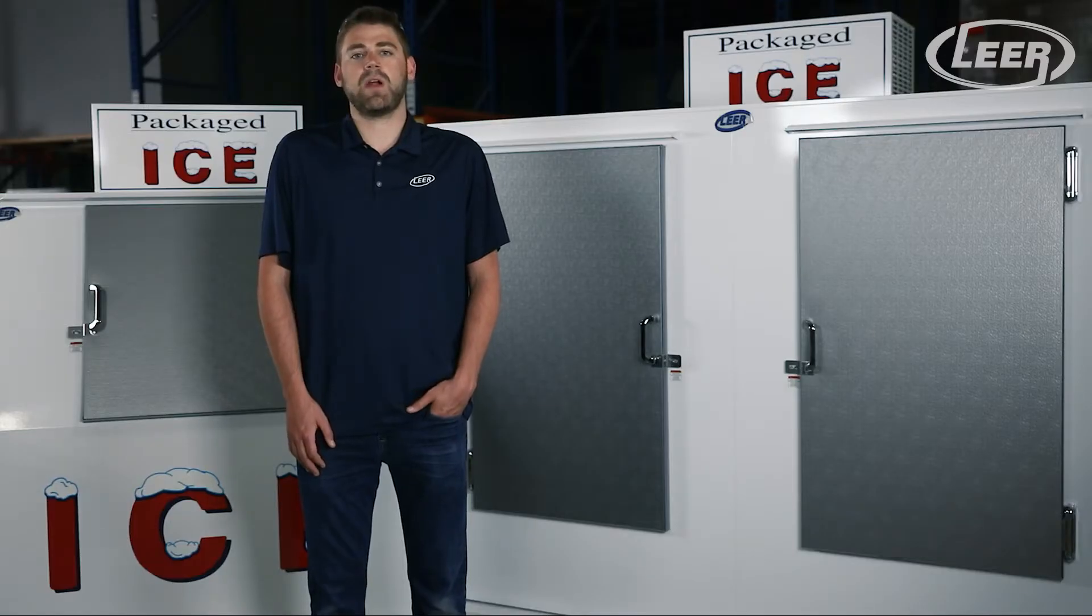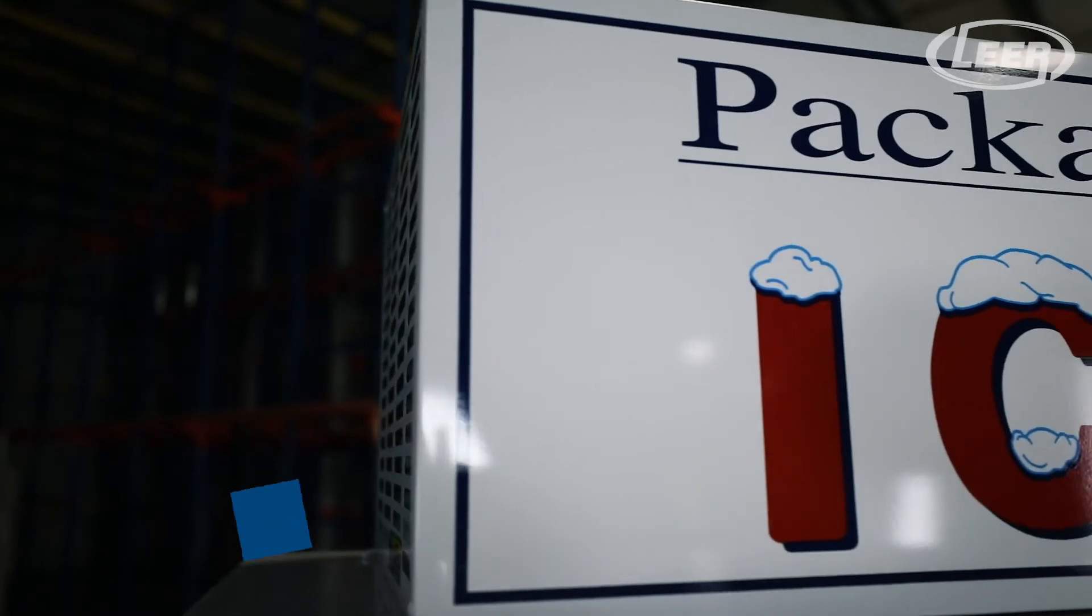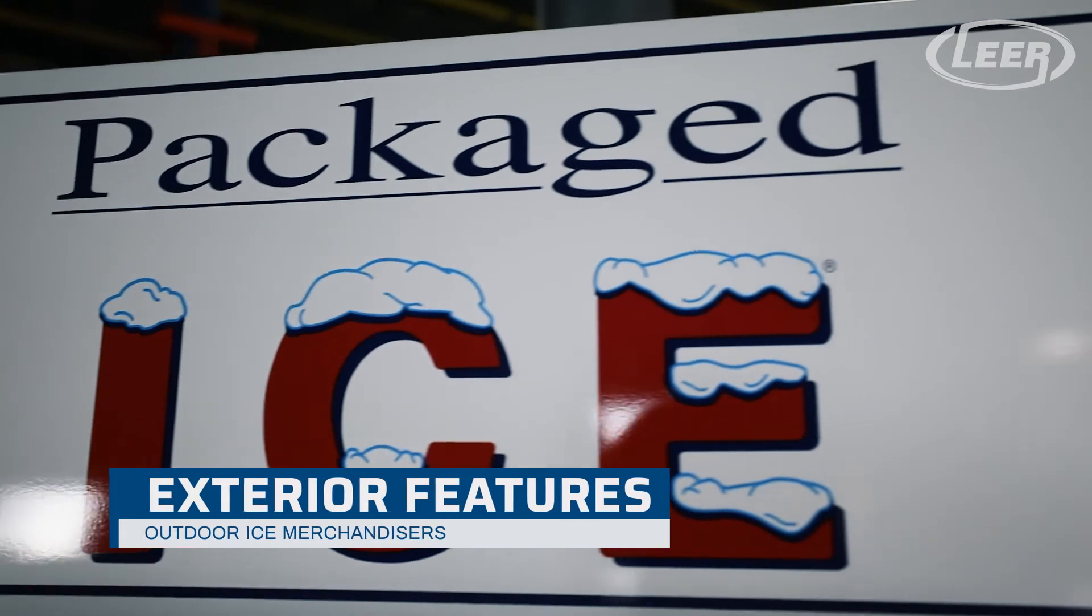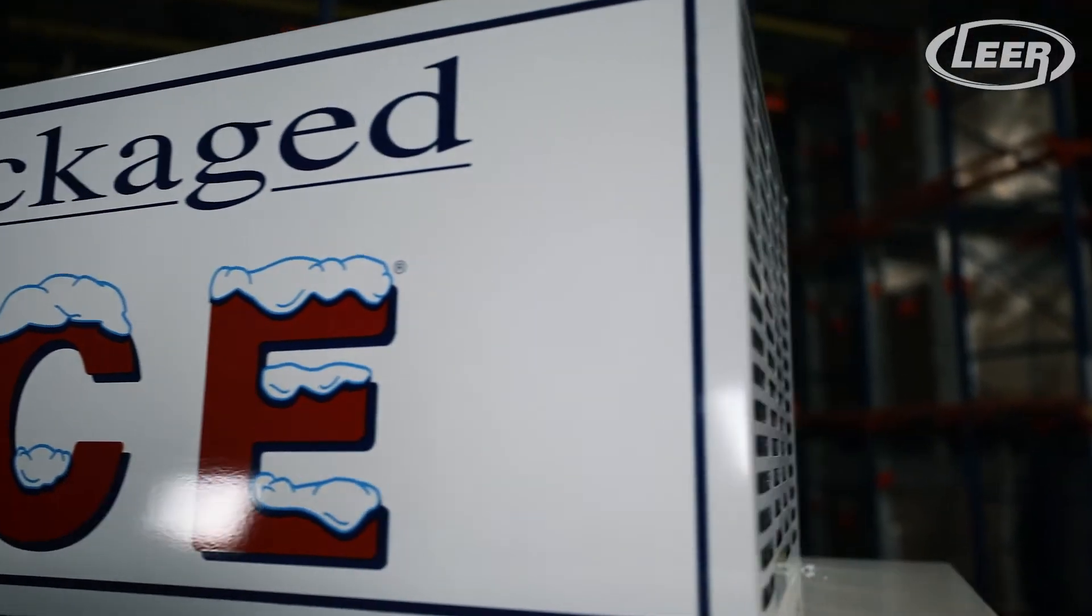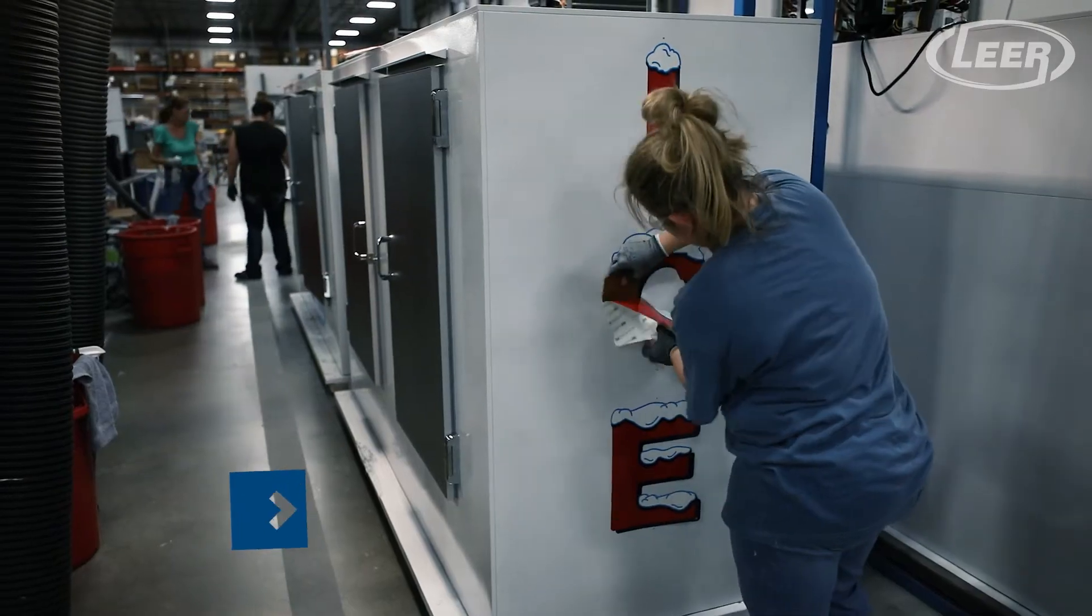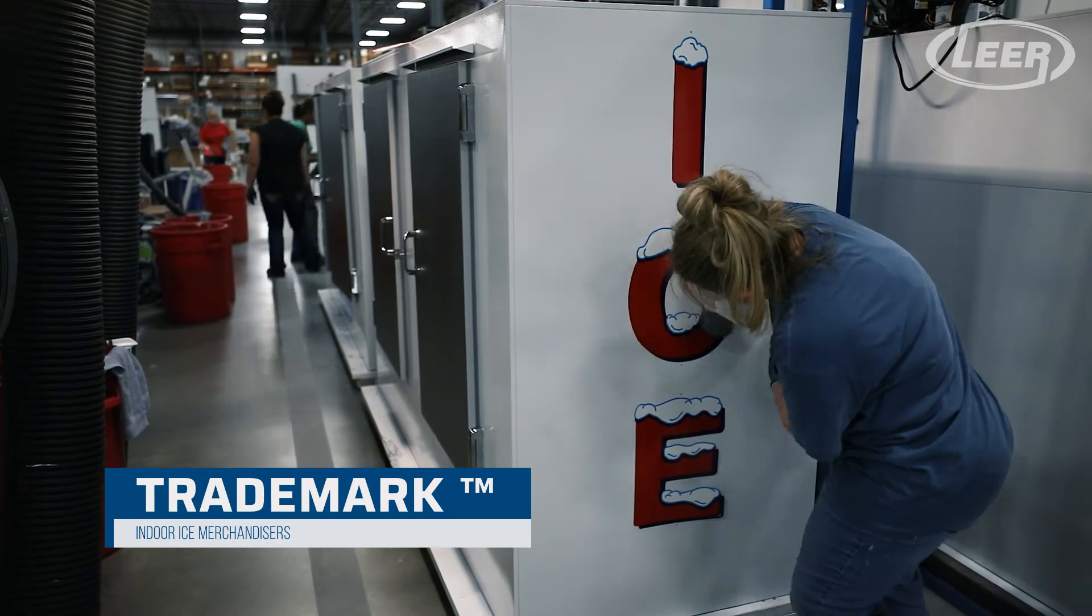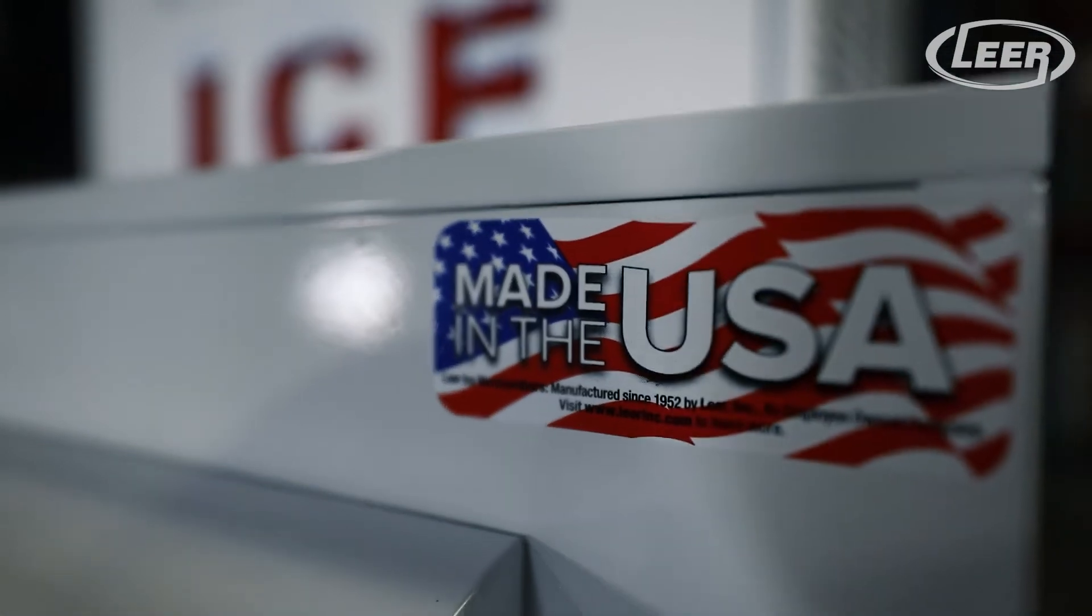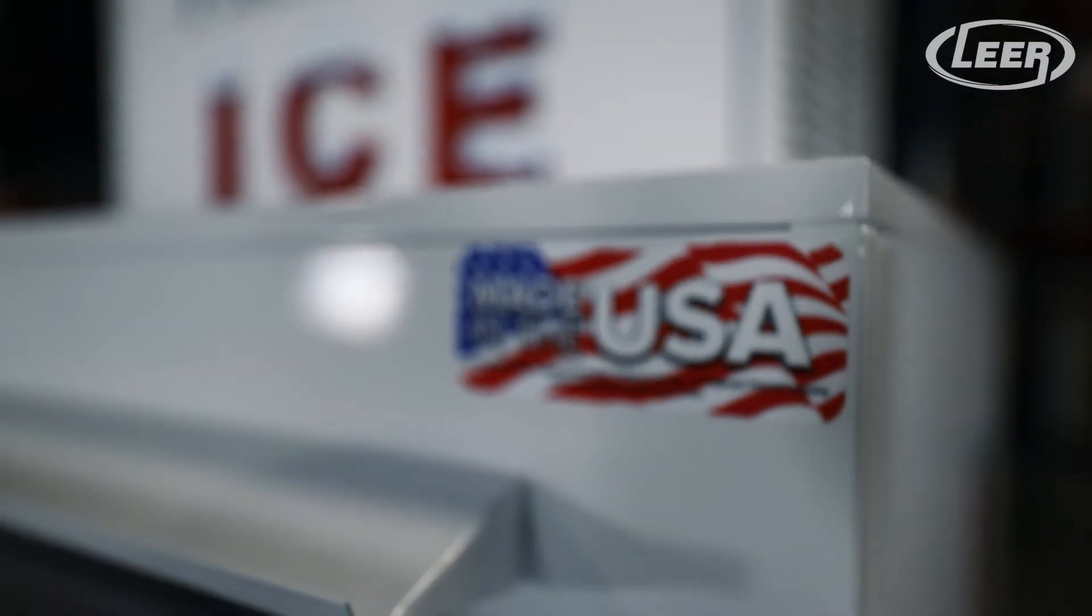Now let's continue working our way around the unit. The first thing to note are the patented iconic red ice decals and the snow-capped detail around the lettering. They are a staple of the packaged ice industry and Lear's unique signature trademark that you can't get anywhere else. The merchandisers are manufactured in the United States in small town Wisconsin.